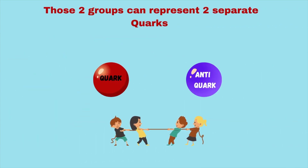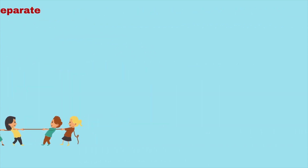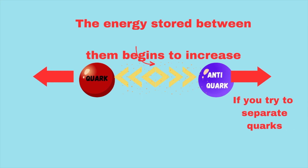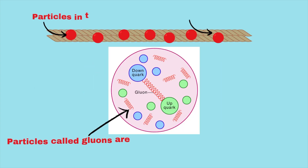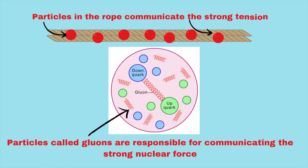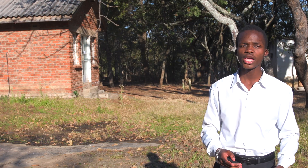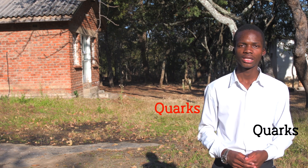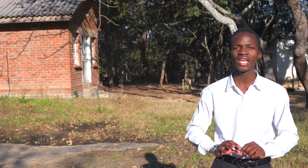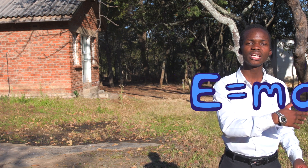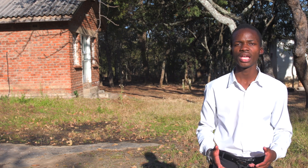Those two groups can represent two separate quarks. If you try to separate quarks, the energy stored in the force field between them begins to increase. Just like particles in the rope communicate that strong tension, particles called gluons are responsible for communicating the strong nuclear force. But if you continue to pump in enough energy, that energy will be converted into mass, and new quarks start popping up. This is according to Einstein's famous equation, E equals mc squared, which says that mass and energy are equivalent.